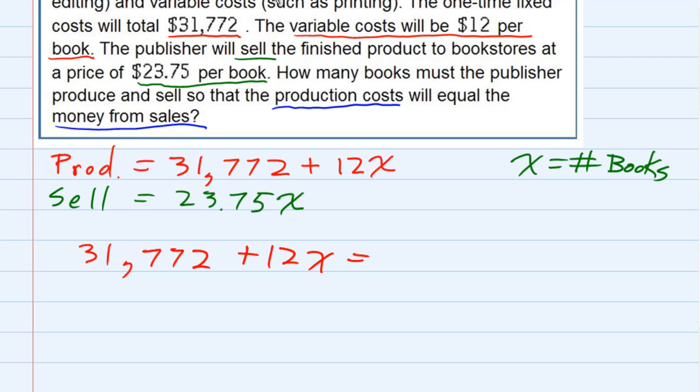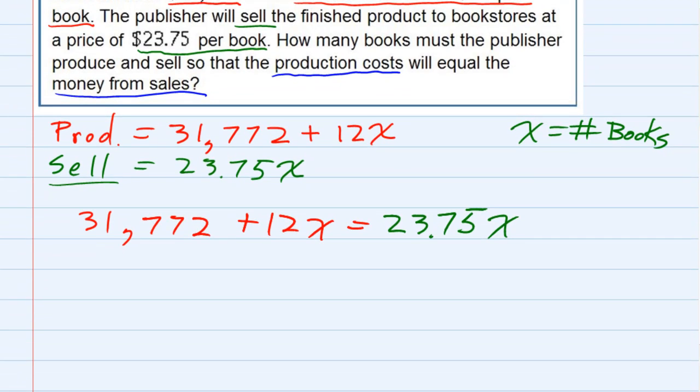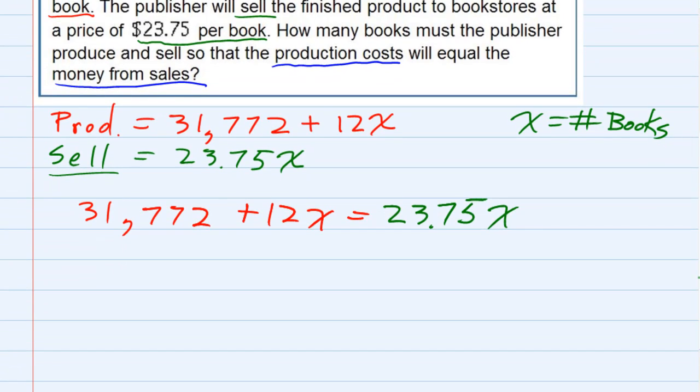We're going to set that equal to our sales cost, which is $23.75 times X. We've got our equation, and it has an X on both sides.